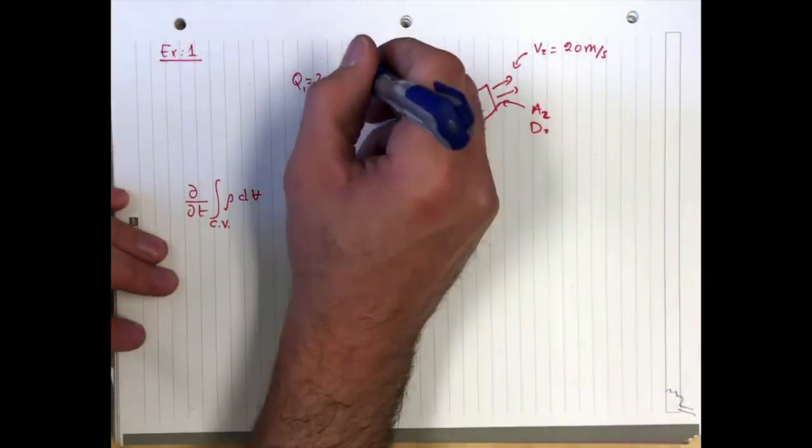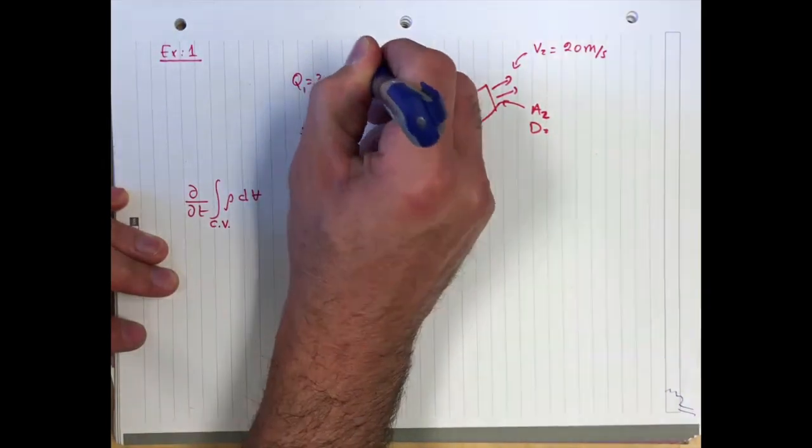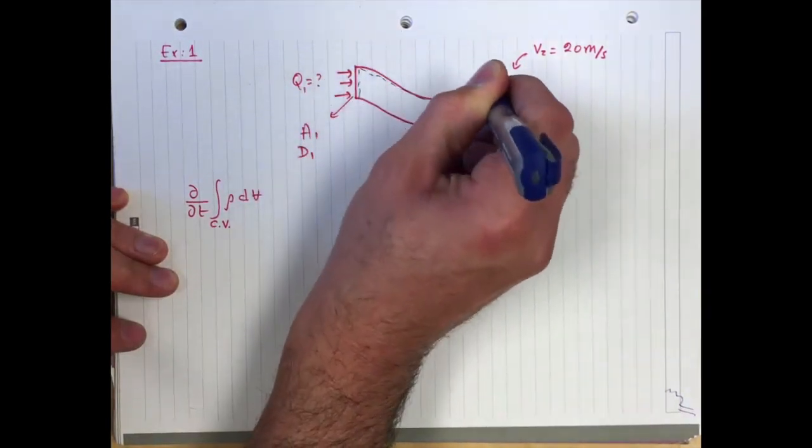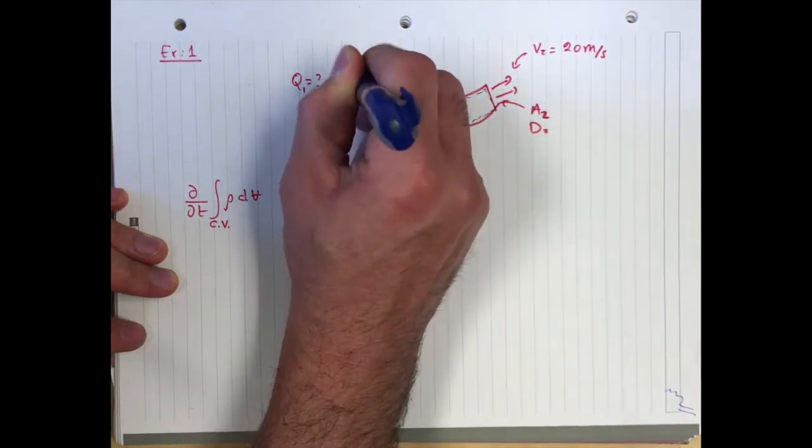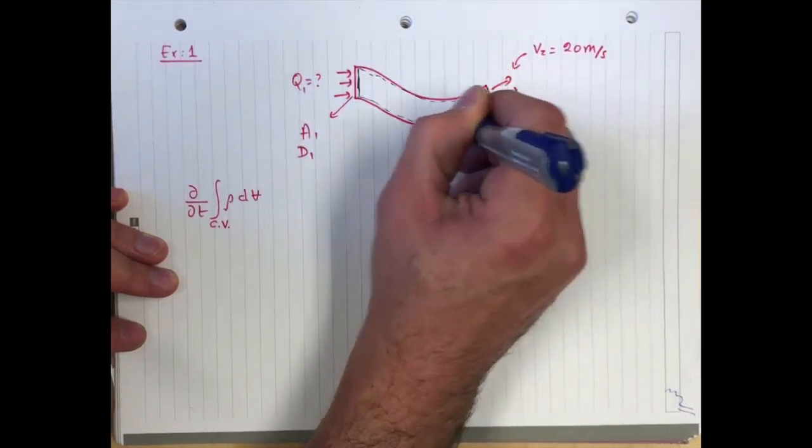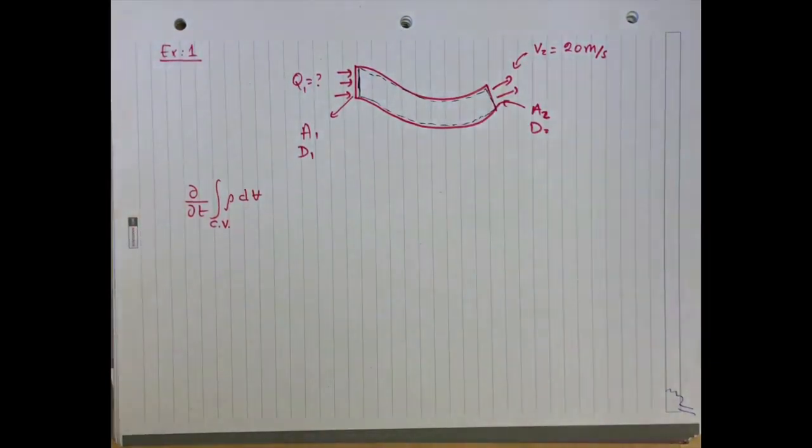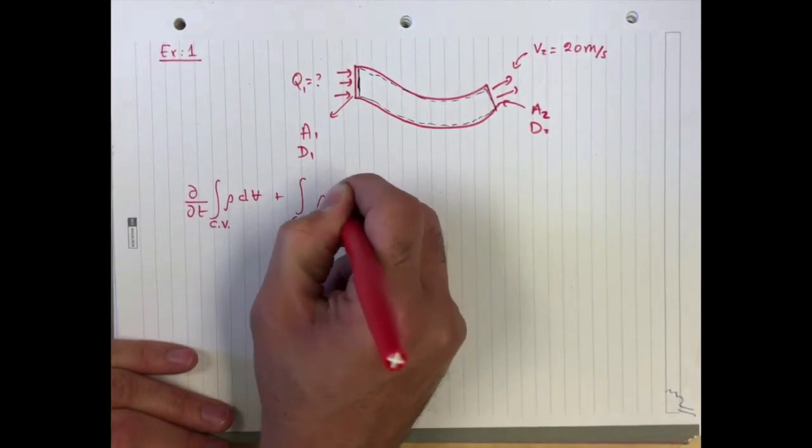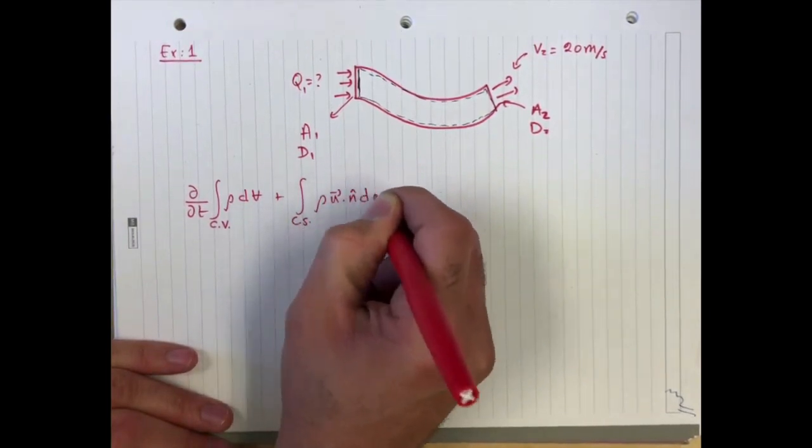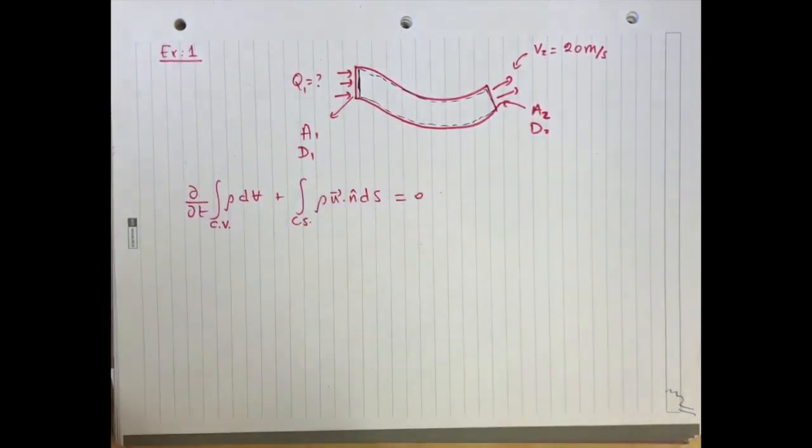So we have to first define our control volume as being this whole section of the pipe. So these are the control surfaces over here. Plus the integral over the control surface of rho u dot n ds. That's equal to zero.